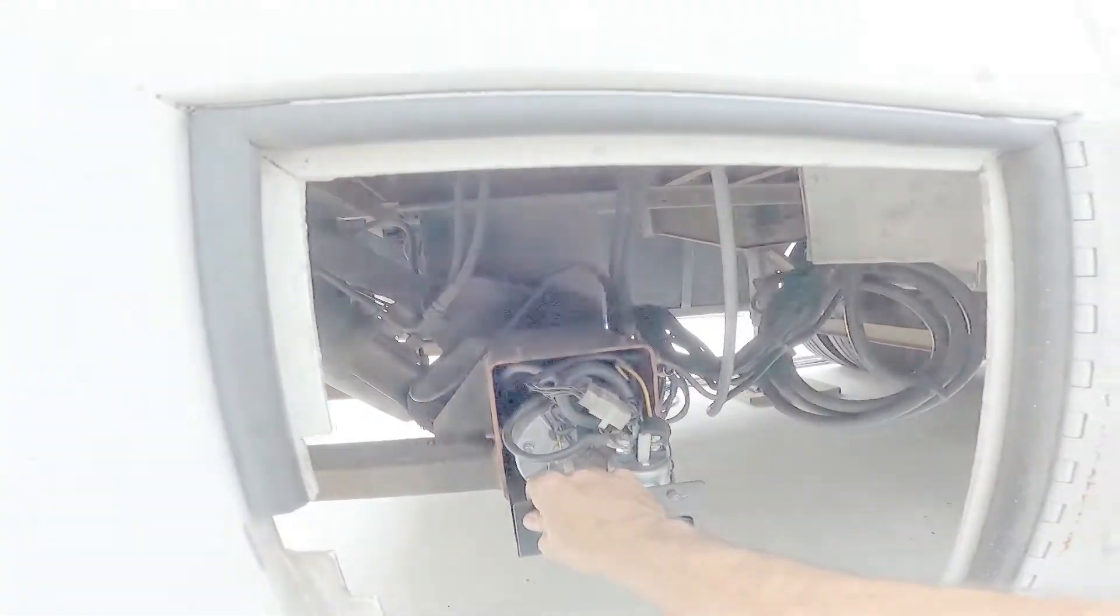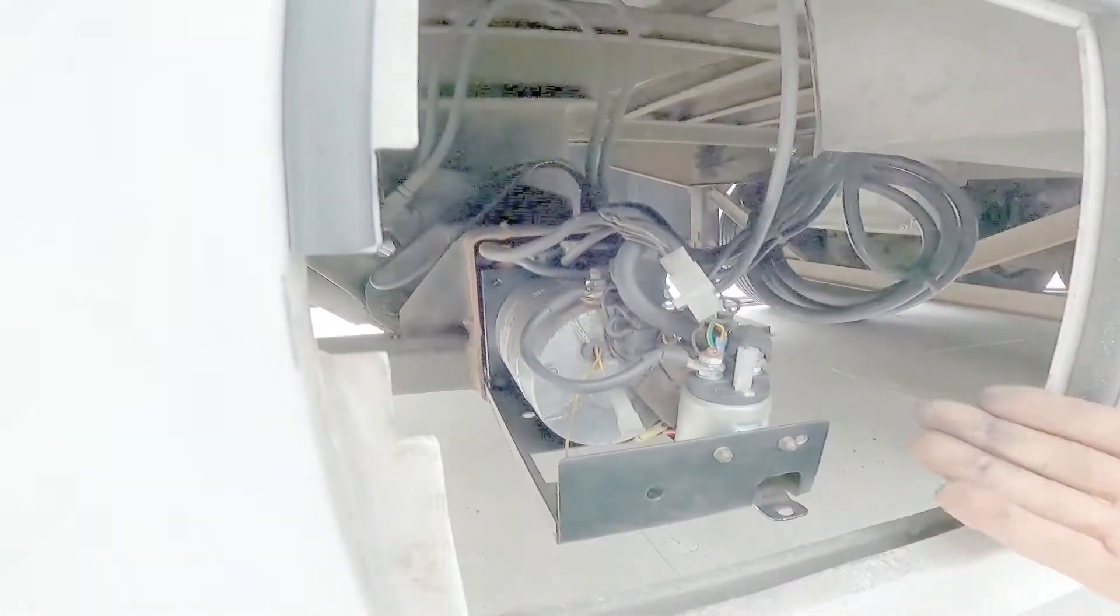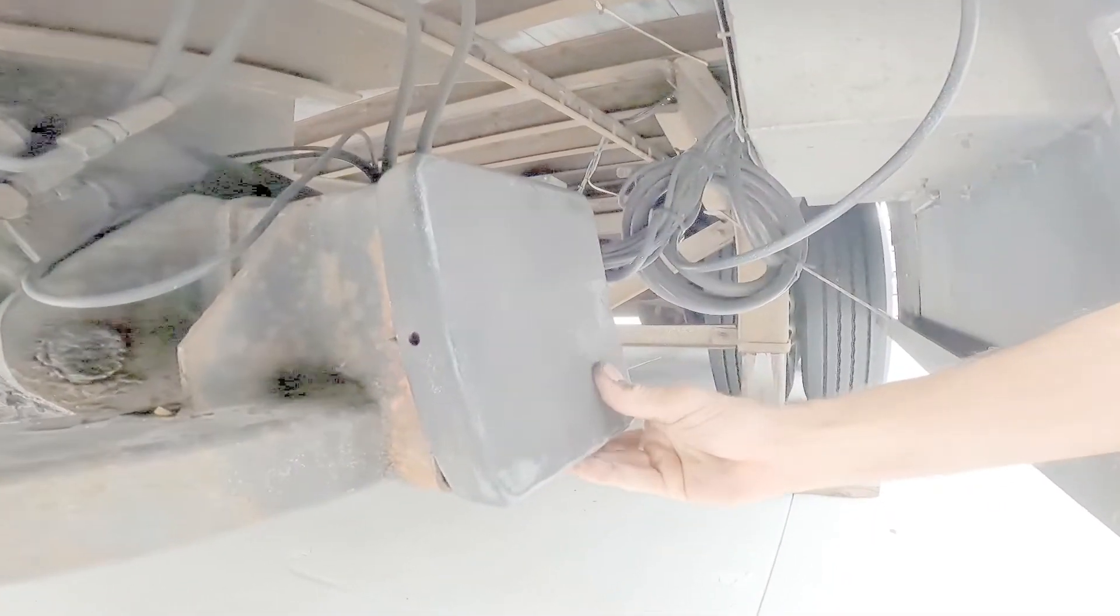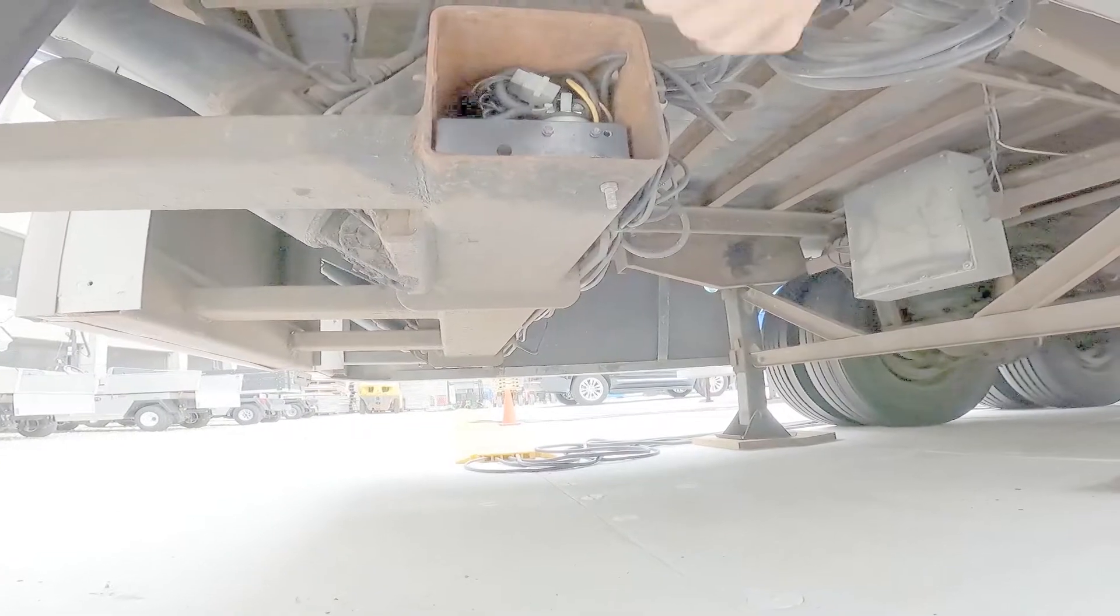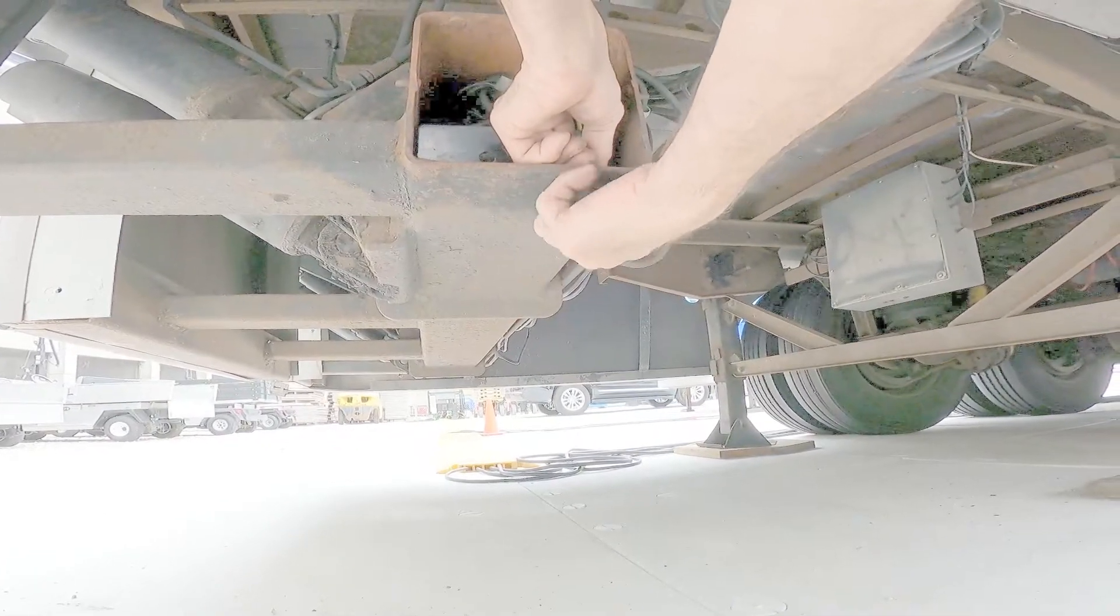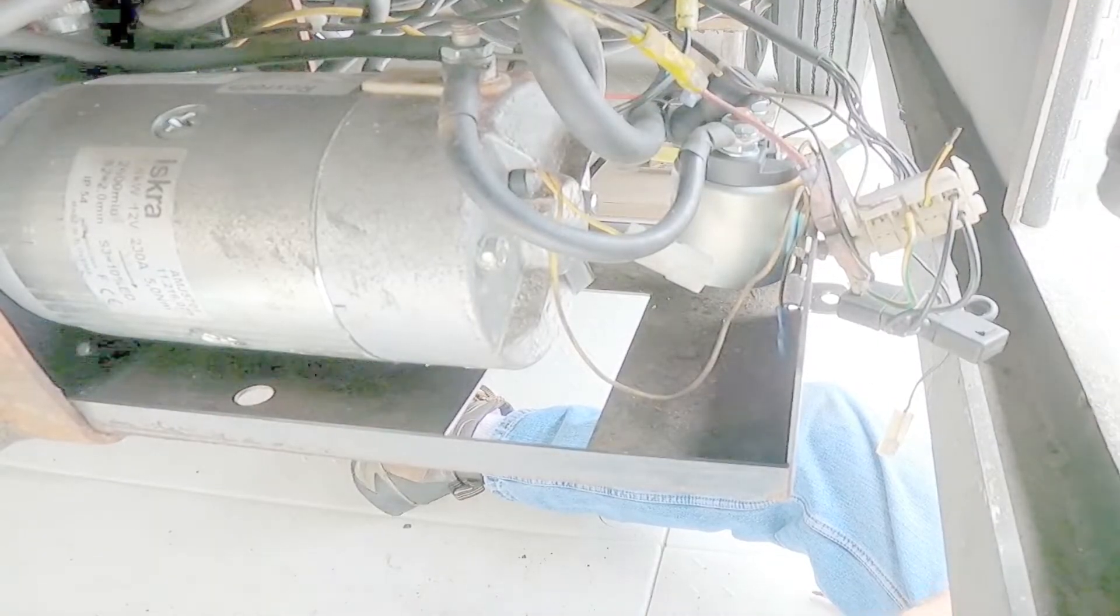So the first thing you want to do when the lift gate stops working is to pull out the tray that holds all of the controls. Here's how you do that. First you got to remove this rubber cover, be careful because this is going to get really dirty. Then remove this bolt that holds the tray in place, and then just pull this whole tray out.